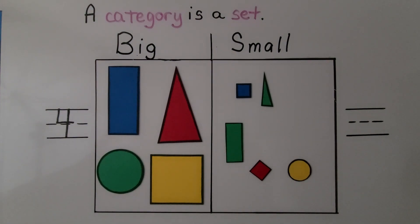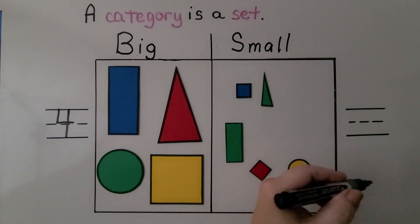We can count the small shapes. 1, 2, 3, 4, 5. And we can write the number 5.